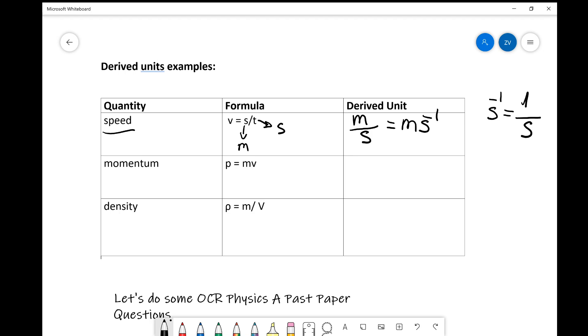Okay, well the next example, momentum, p equals m times v, which is mass times velocity. The base unit for mass is the kilogram. And velocity we've already seen just up here that the unit for that is meters per second, so ms to the power of minus one. So the derived unit for momentum is actually kilograms ms to the power of minus one.